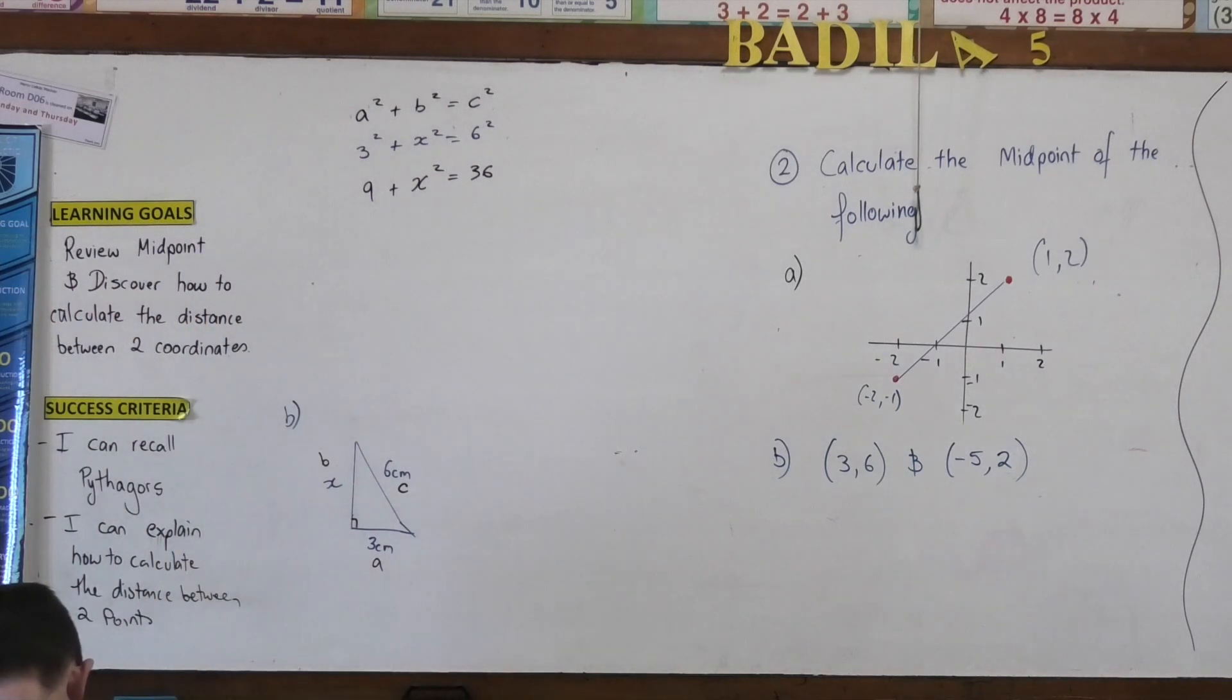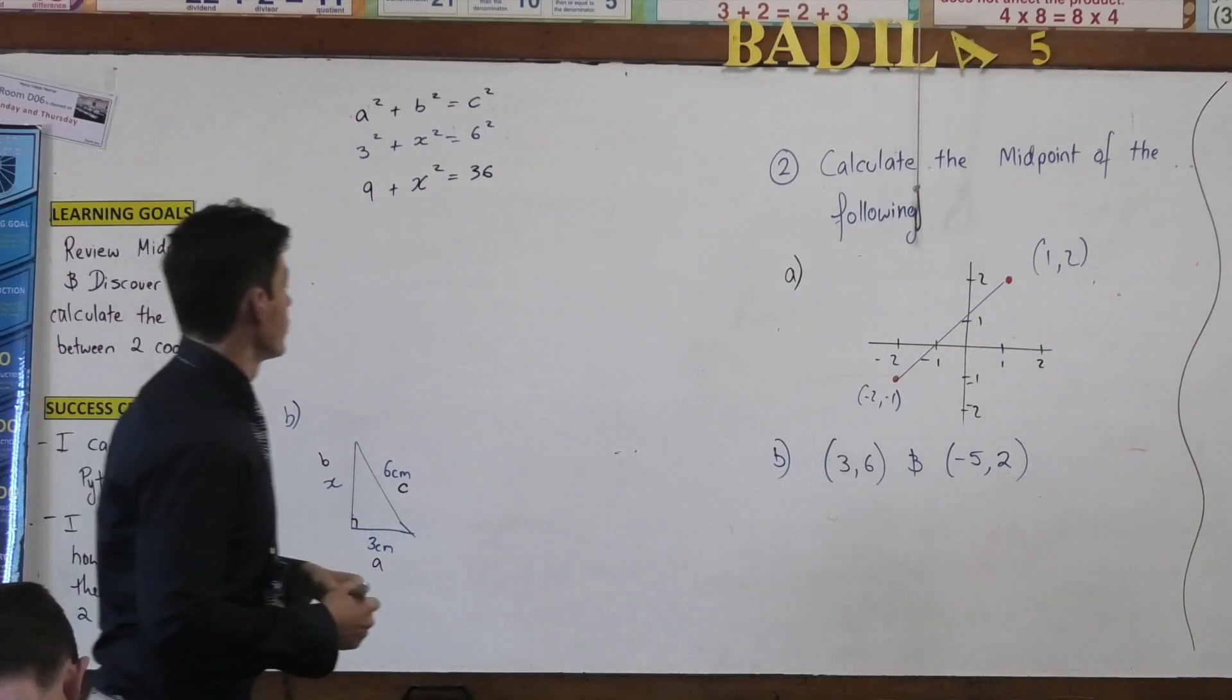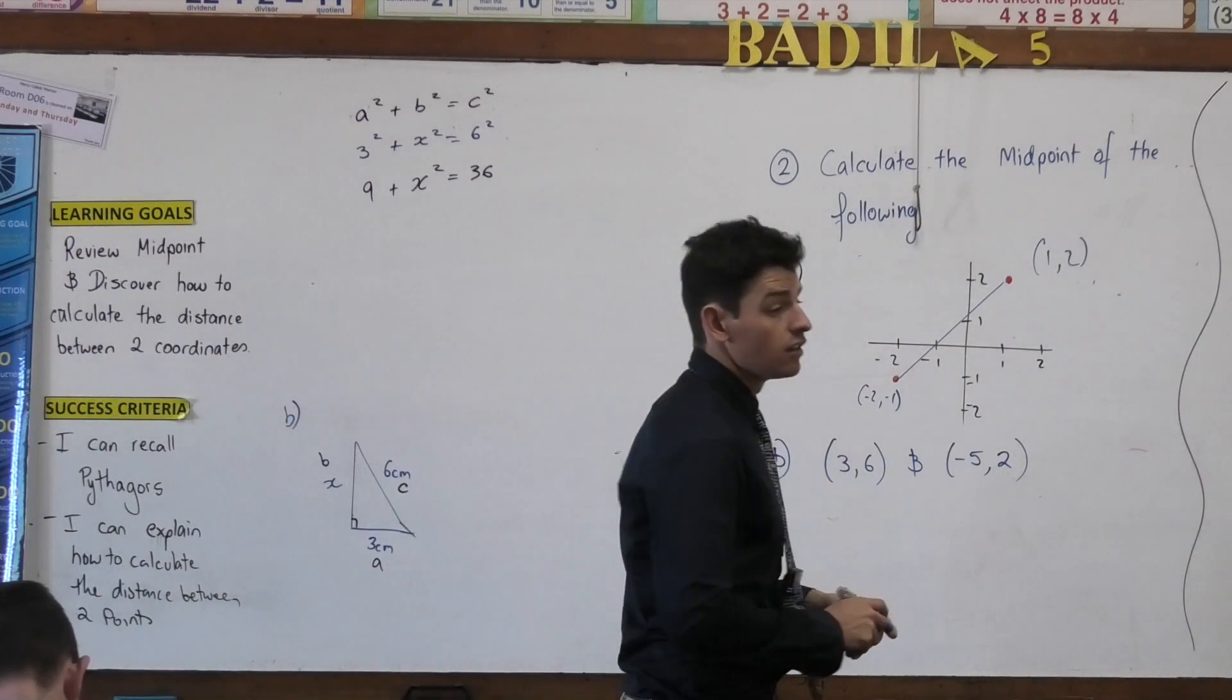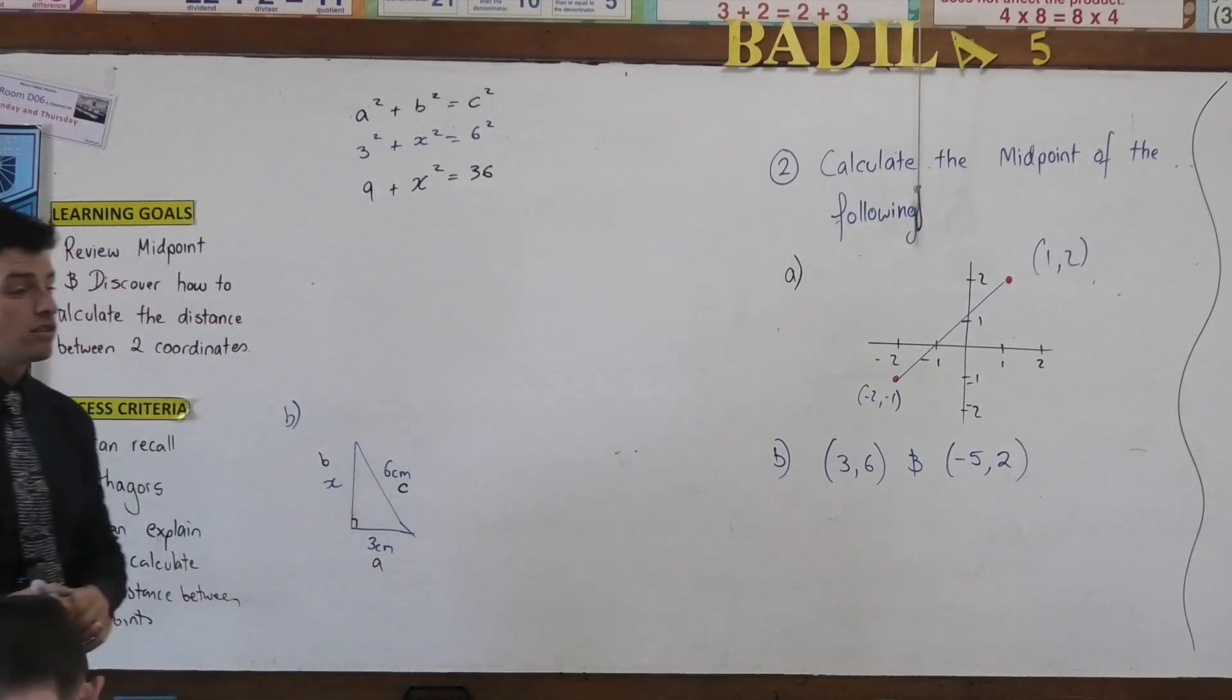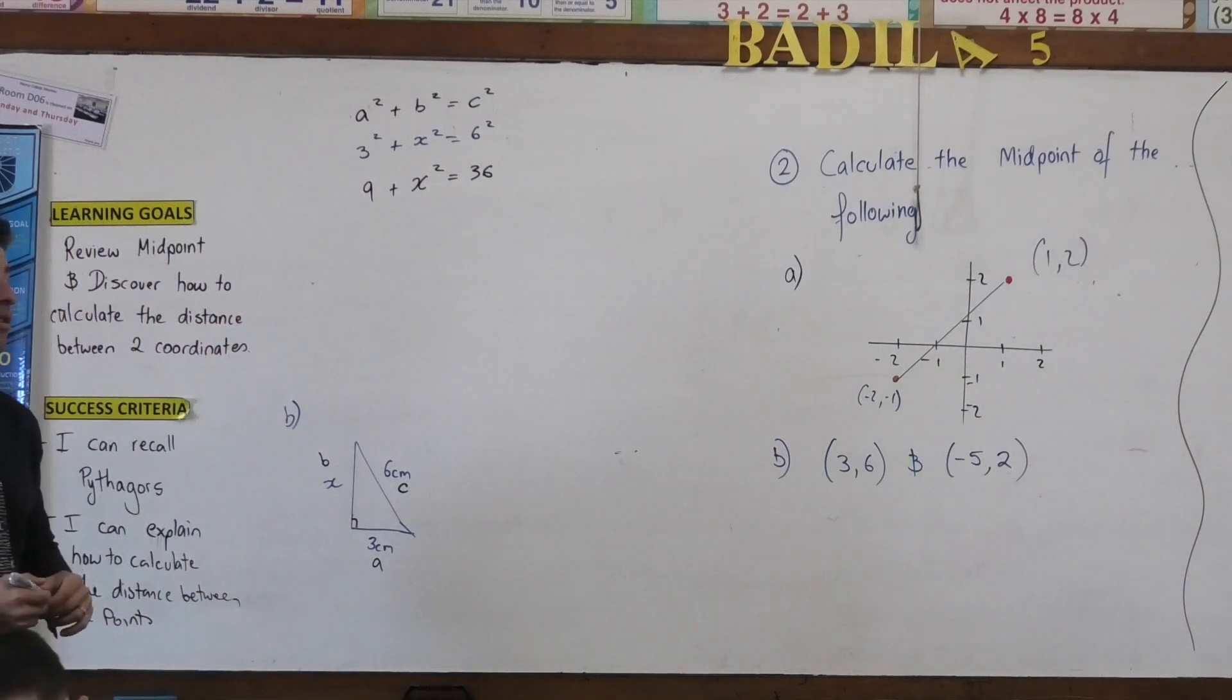So I need to identify which one do I want to attack first? Or which one do you reckon I should attack first? 9. 9? Why should I attack the 9 first? You're right. Why should I attack the 9 first?